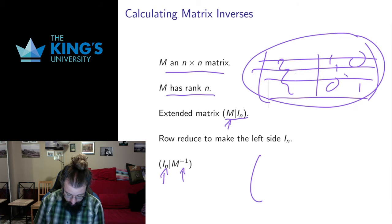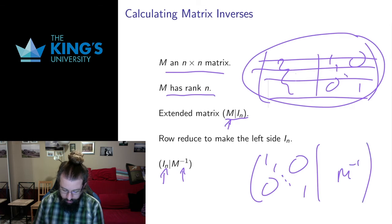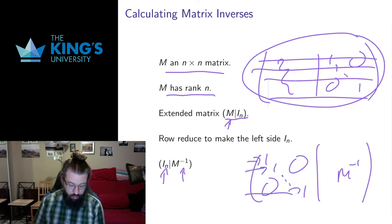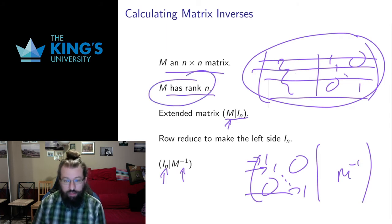Now this left side I want to turn into the identity matrix, so it's going to have ones down the diagonal and zeros everywhere else, and here I'll get M inverse. That only happens if I have a leading one in each row. That only happens if there's the maximum number of leading ones. So that's why the matrix needs to have rank n to have an inverse. If it does, we can do this—it will row reduce to the identity, and we can use that to calculate its inverse.